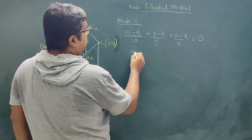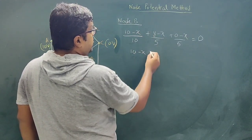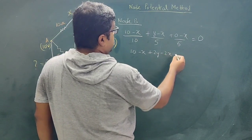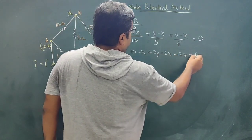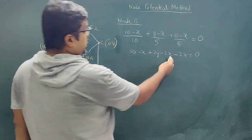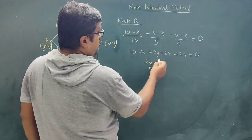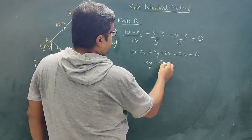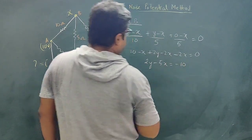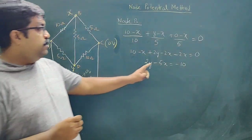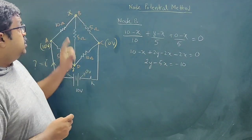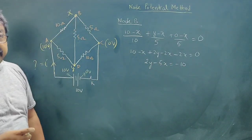Simplifying: 10 minus X plus 2Y minus 2X minus 2X equals 0, which gives 2Y minus 5X equals minus 10. This is equation 1: 2Y minus 5X equals minus 10.